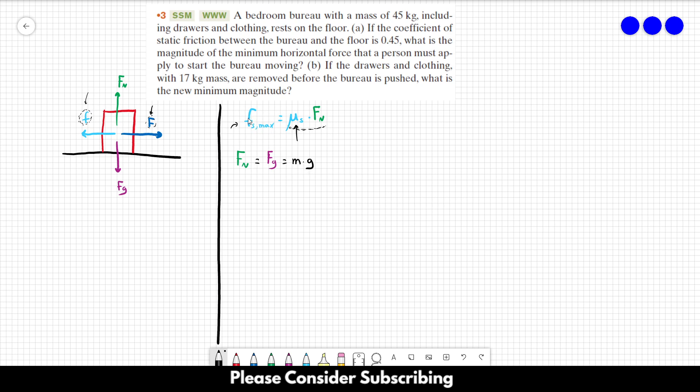So the minimum force that we have to apply in order to start the bureau to move is equal to, let's write it down, Fs max equals mu s times m times g. And that's pretty much it.